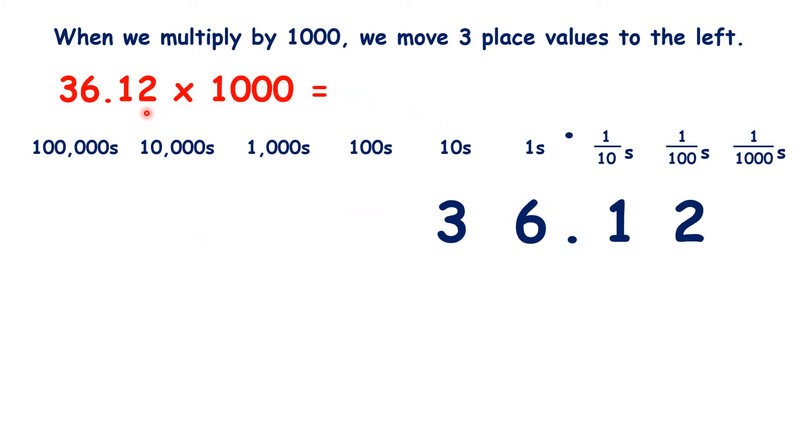So what is 36.12 times a thousand? We move the digits three places. We now have an empty units column, so we write a zero so that our other place values are clear, and we have our answer 36,120.